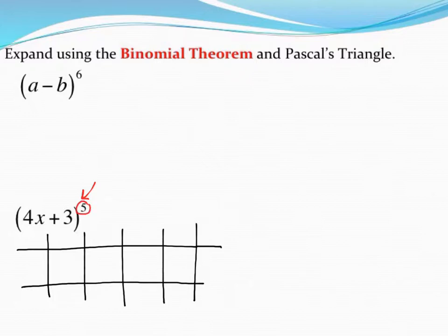So looking at row five of Pascal's triangle, I see that those numbers are one, five, ten, ten, five, and one. So that's the top row of my chart, the numbers I've gotten from Pascal's triangle.